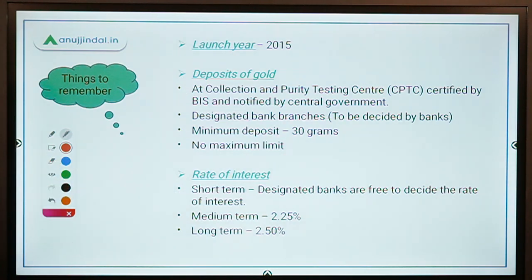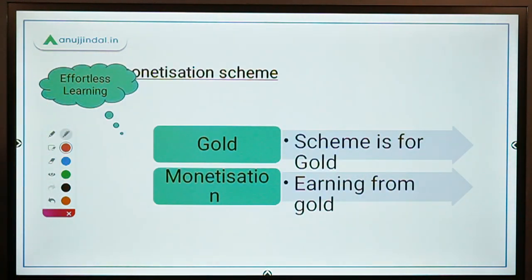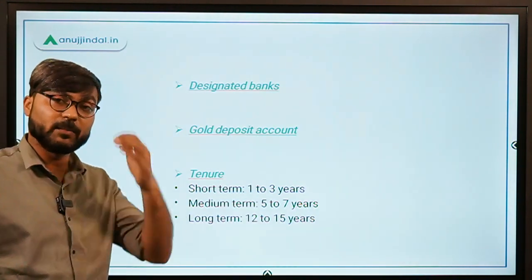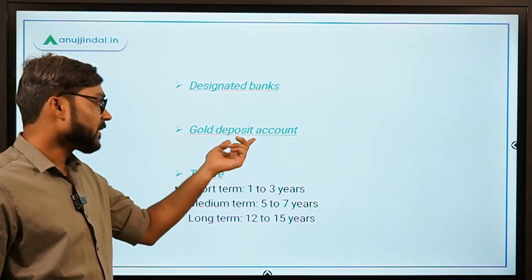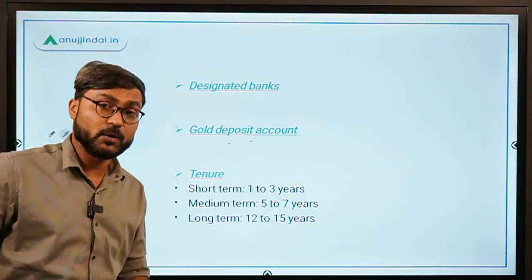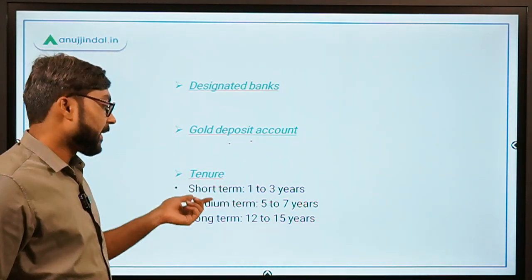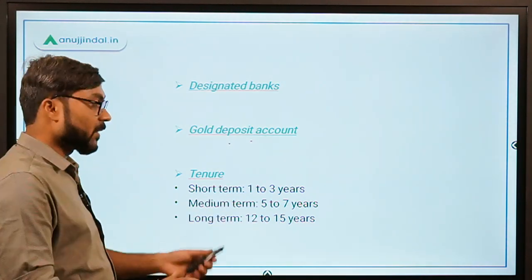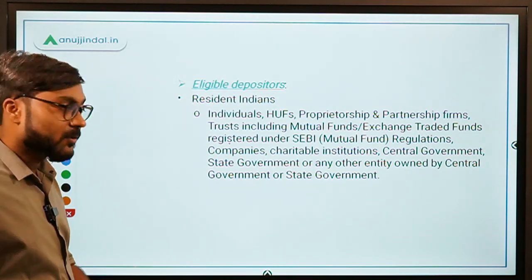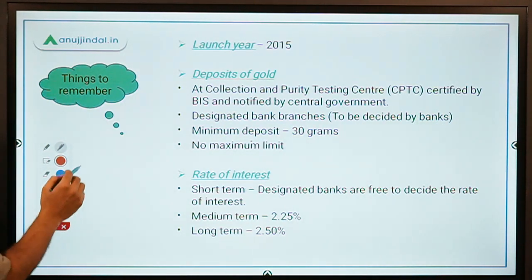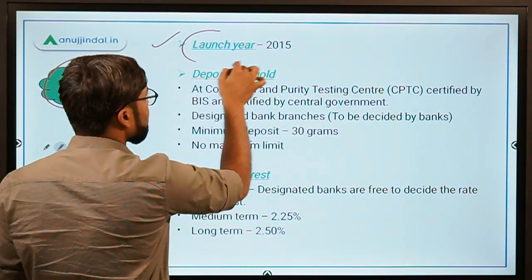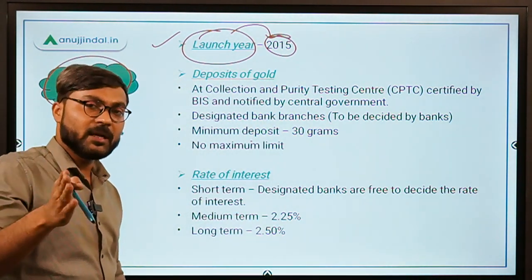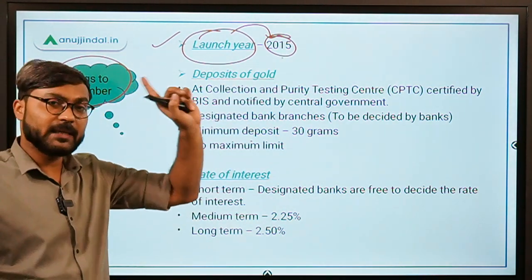To summarize what we've covered so far: the objective is clear; the ministry is the Ministry of Finance; designated banks are all scheduled commercial banks; gold deposit account accepts physical gold in forms of jewelry, coins, or bars; tenure is short term 1–3 years, medium 5–7 years, long term 12–15 years with broken periods allowed; and eligible depositors are all resident Indians. The scheme was launched in the year 2015 along with the Atal Pension Yojana.